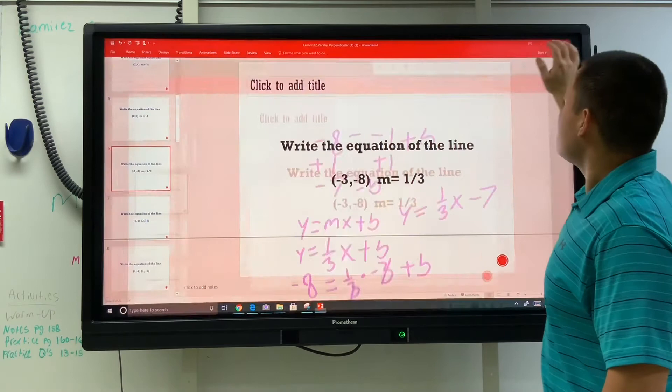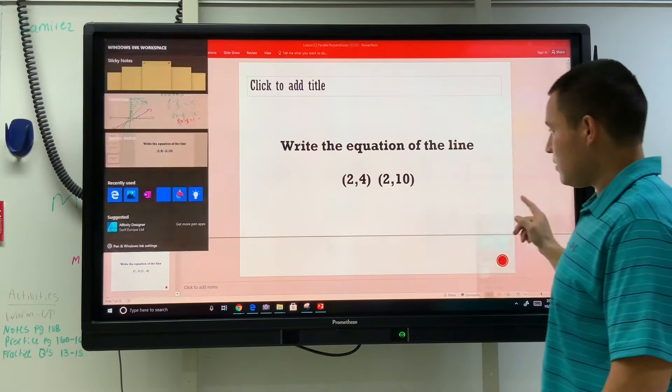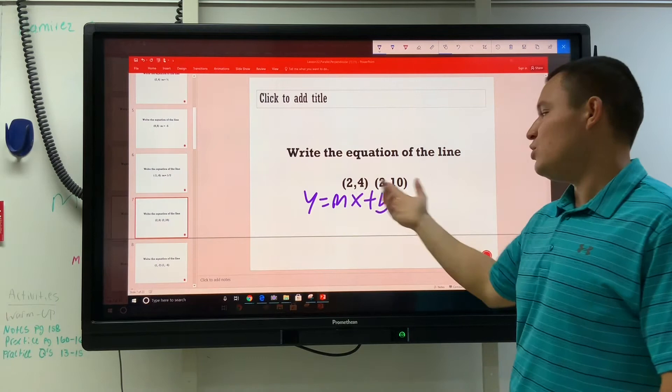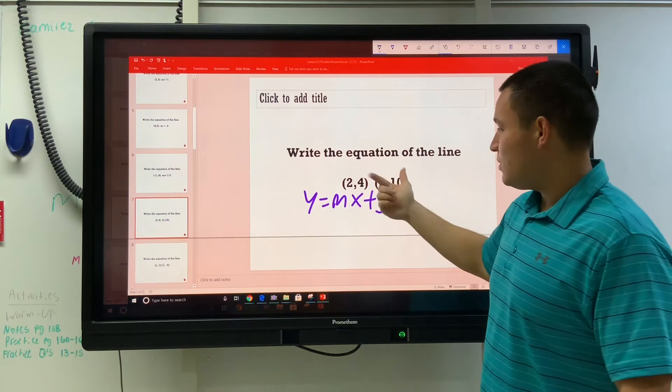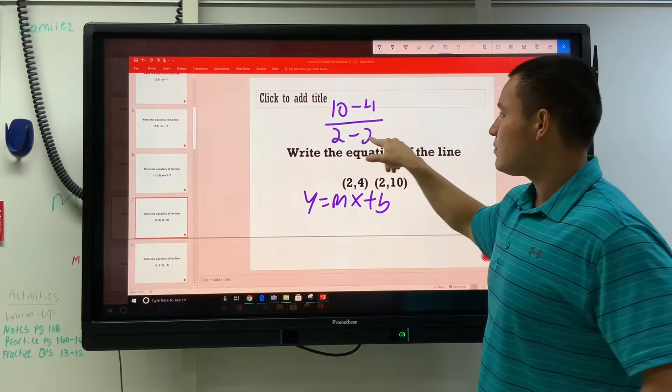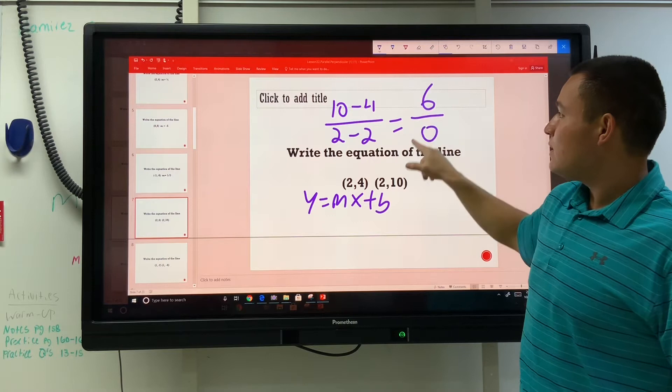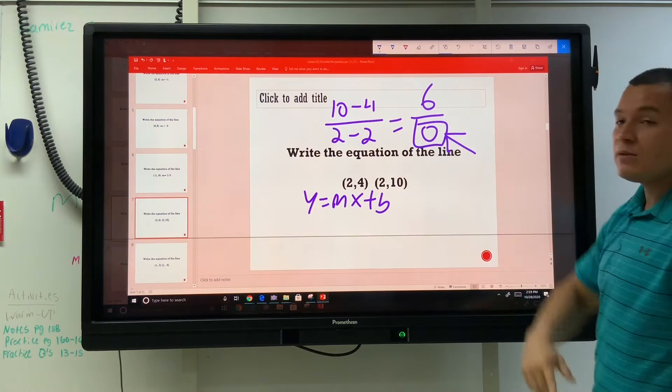Let's do a few more. What if I just give you two points? How are you going to write y equals mx plus b from two points? The second step is the same, but only the first step changes. Instead of only finding b, we also need to find m. So we'll do 10 minus 4 over 2 minus 2. What's 2 minus 2? 0. 10 minus 4? 6. What does this make? A 0 on the bottom? That's undefined.